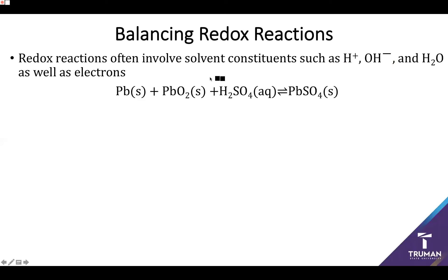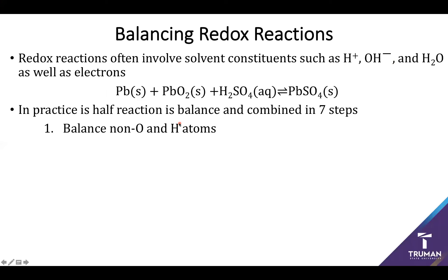So in practice if I'm going to try and balance my full lead acid battery I'm going to have to do so by first balancing the half reactions and then combining them into my whole net reaction. And this is typically performed by going through a seven step process. Step one is going to be to draw our half reactions and then balance any non oxygen and hydrogen atoms. So in this case it's going to be lead and sulfur. After that we're going to balance the oxygen by adding water and then we're going to balance the protons by adding protons.